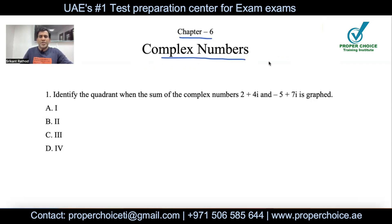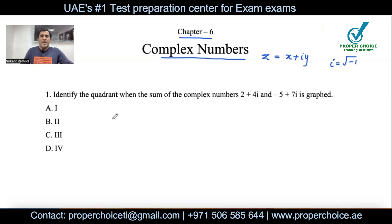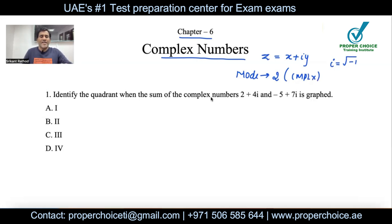Complex numbers are generally written in the form z = x + iy, or z = a + bi, where i is representing an imaginary number whose value is the square root of negative one. Complex numbers is completely a calculator-type topic, so while doing any operations, put your calculator in complex mode. Press the Mode button on your scientific calculator and select 2, which is for Complex (CMPLX), then do any basic operations like addition, multiply, divide directly.